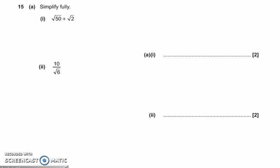Okay, so simplifying surds. I'm just simplifying root 50 plus root 2.